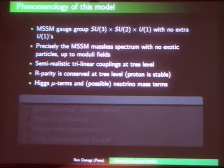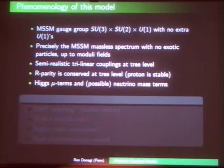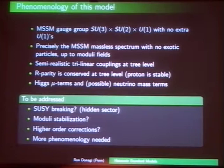What we found in the phenomenological analysis: this is an MSSM. The gauge group is exactly right, no extra U(1)s. The spectrum is exactly right, no exotic particles — except it depends on some complex moduli. The trilinear couplings are semi-realistic at tree level: we have masses for up quarks but not down quarks classically, and you need quantum corrections to improve the situation. R-parity is conserved at tree level, so to the extent we can check it the proton is stable. There are Higgs mu terms, and with some interpretation we get neutrino masses or right-handed neutrinos. Still to do: SUSY-breaking via hidden sector, moduli stabilization, higher-order corrections.